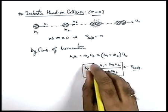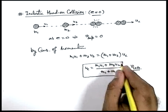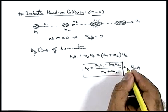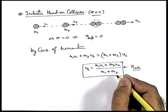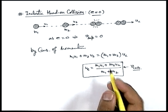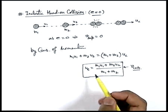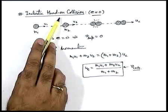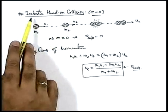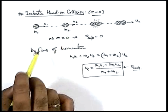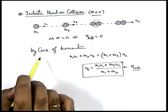This is also the velocity of centre of mass for the system of two balls. In absence of external forces, the centre of mass continuously moves with the same speed. So keep all three cases of head-on collisions in mind: elastic, partially elastic, and inelastic head-on collisions. We'll take up some examples to analyze all three cases in more detail.